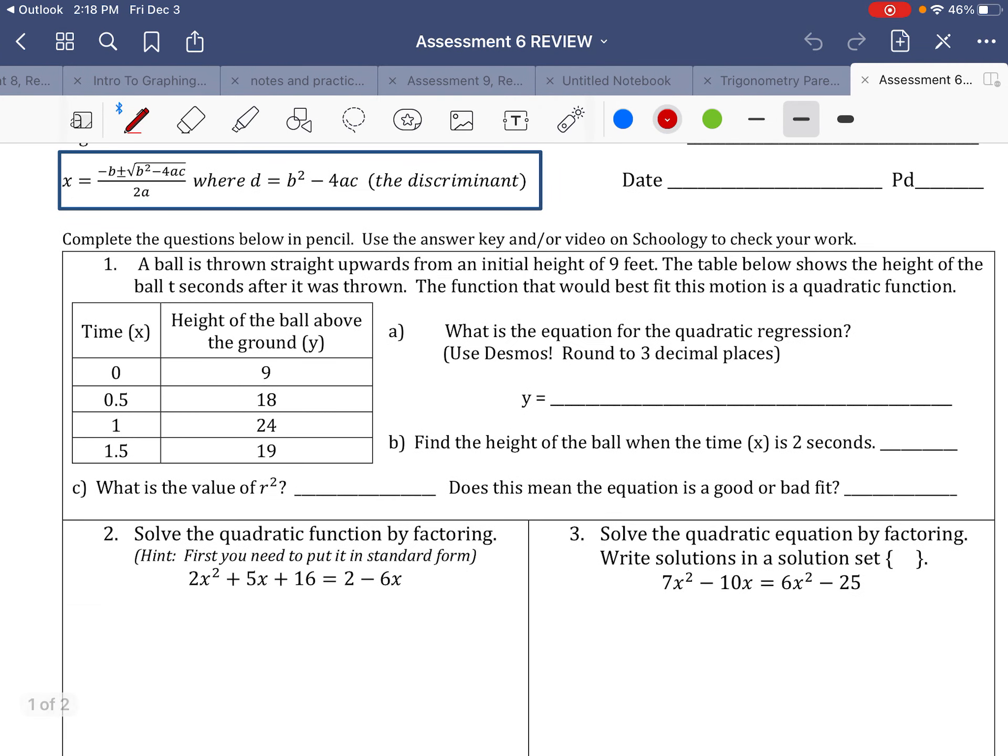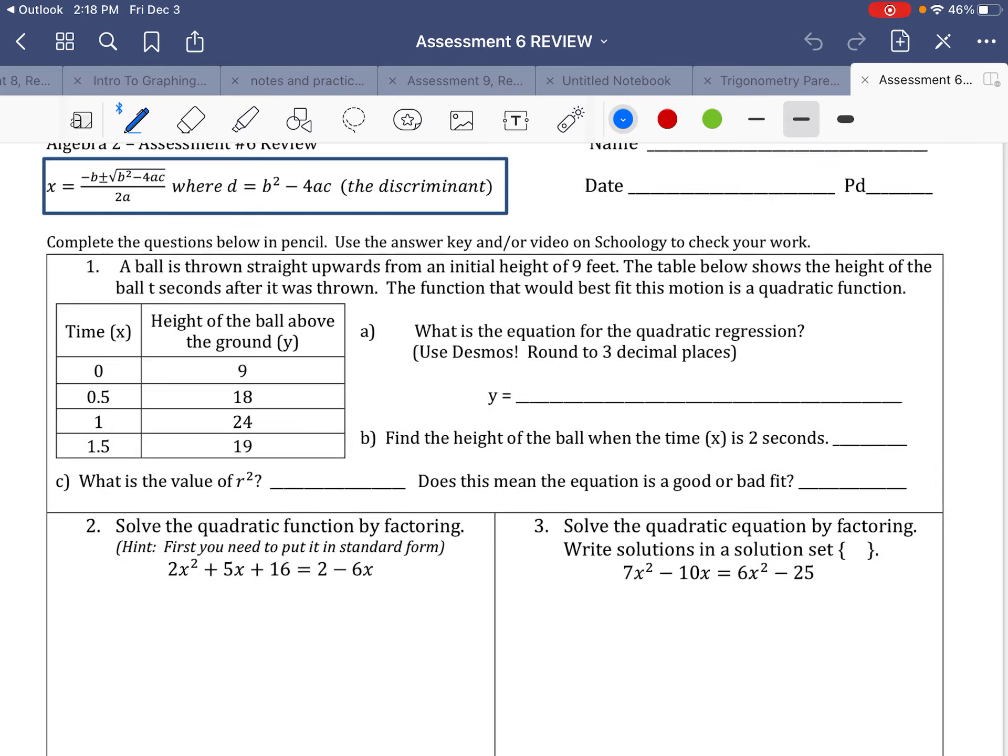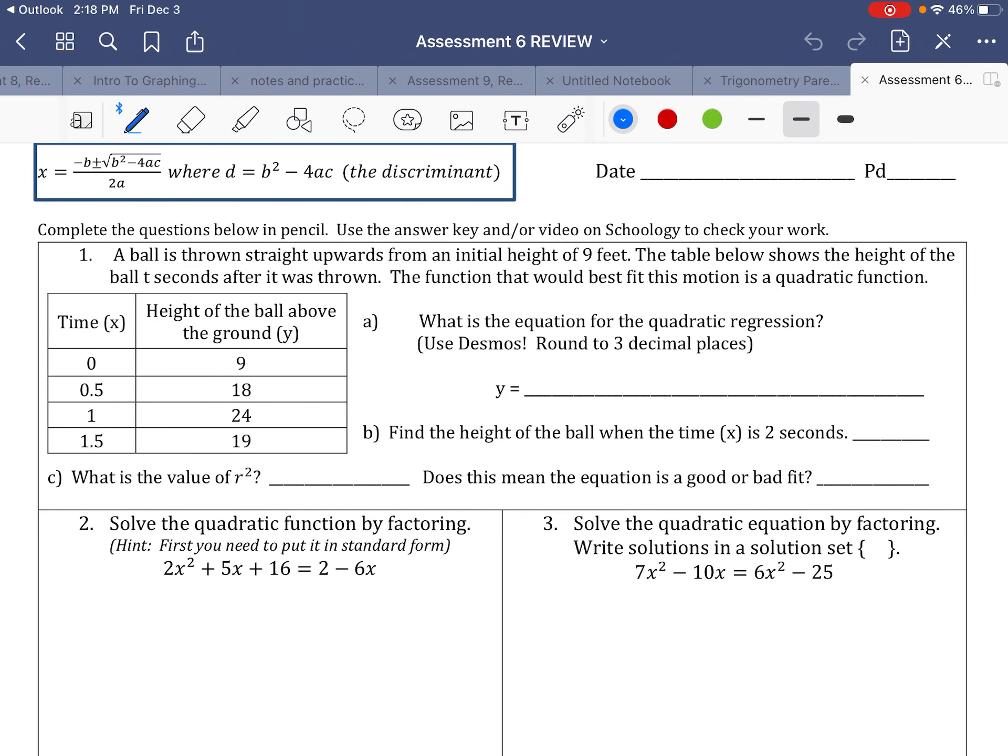Alright, so here's a review for assessment number six. Let's go ahead and go over these answers. In question number one, a ball is thrown upwards from an initial height of nine feet, so that's why you see a nine right here. The table shows the height of the ball t seconds after it was thrown. The function that would best fit this is a quadratic function.